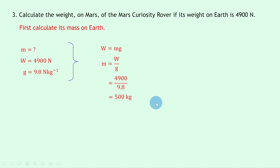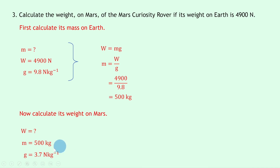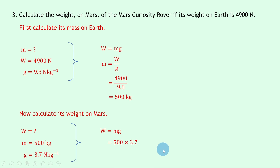However, we're not finished — we've only found the mass, but we want the weight on Mars. So now we calculate weight on Mars: W is what we're trying to find, m is 500 kilograms, and mass stays the same on Mars and earth no matter what planet we're on. Lastly, g on Mars is 3.7 newtons per kilogram — you'll get that value on the data sheet. Writing down W = mg and substituting in: 500 times 3.7 gives an answer of 1850 newtons.